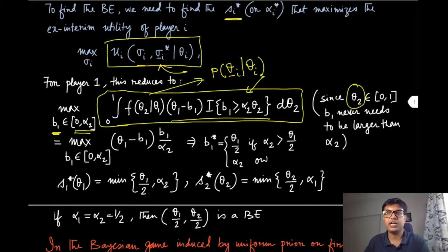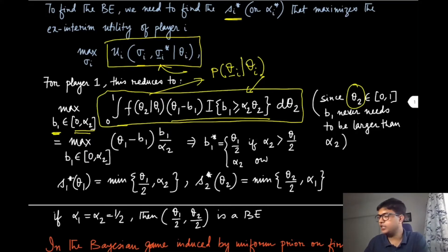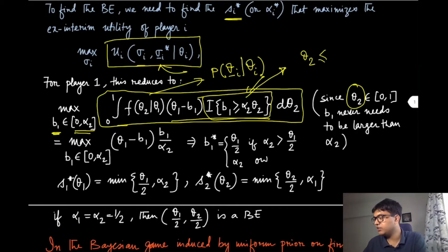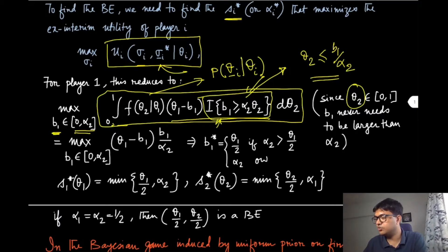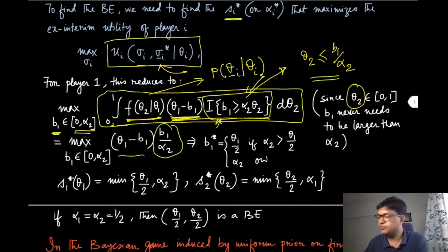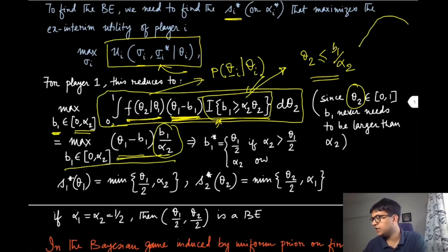Since alpha2 is a multiplicative factor less than 1, we restrict b1 between 0 and alpha2. The inner indicator condition becomes theta2 ≤ b1 / alpha2. When this is satisfied the indicator equals 1, so we restrict the integration from 0 to b1/alpha2. Since that term equals 1 and is independent of theta2, we can pull it out, leaving just b1/alpha2 as the value of the integral.